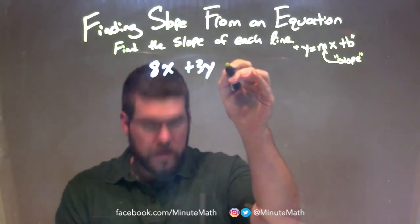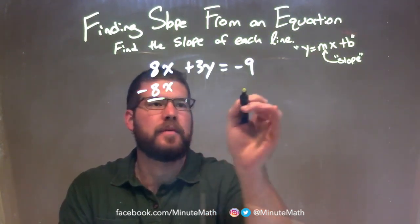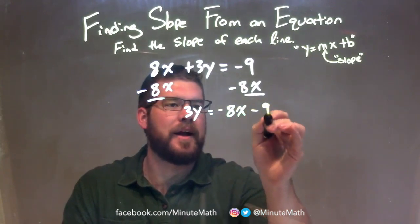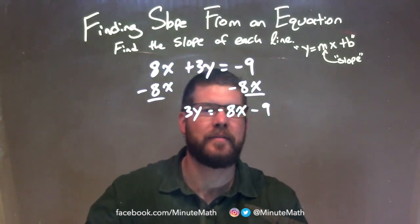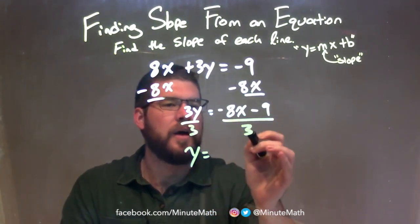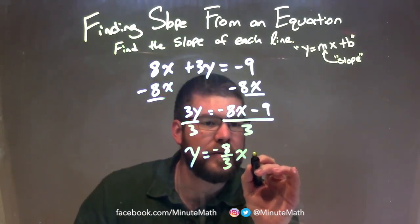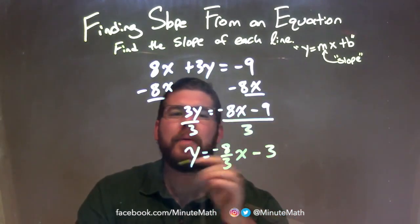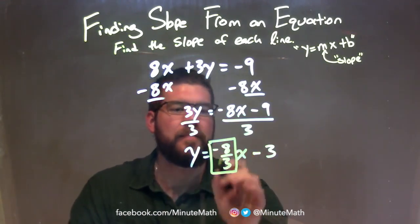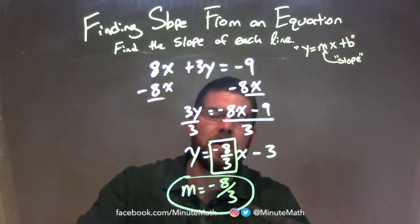8x plus 3y equals negative 9. Our goal is to isolate the y. To do that, I subtract 8x from both sides, leaving me with 3y on the left and negative 8x minus 9 on the right — not like terms, can't combine them. So we have 3y equals negative 8x minus 9. The 3 is the only thing preventing y from being isolated, so let's divide both sides by 3. That leaves y by itself, and we distribute the 3 to both parts: negative 8 divided by 3 is negative 8 thirds, and 9 divided by 3 is 3. Now we have y equals negative 8 thirds x minus 3, in y equals mx plus b form. The m value — coefficient in front of x — is negative 8 thirds. Our final slope is m equals negative 8 thirds.